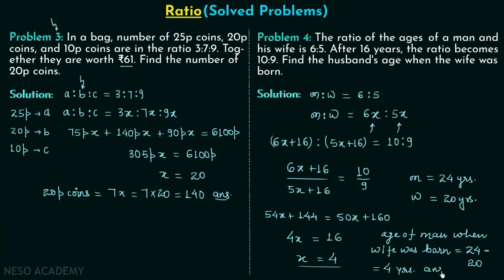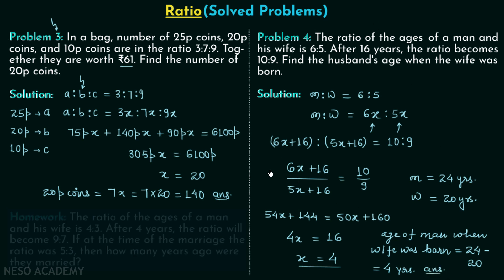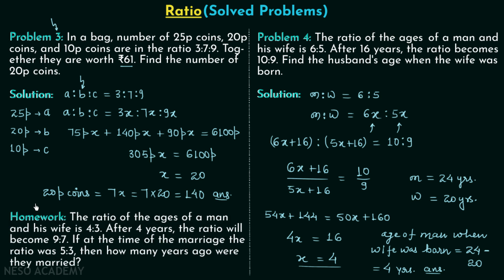We have solved problem number 4. Now for the homework problem: the ratio of the ages of a man and his wife is 4:3. After 4 years the ratio will become 9:7. If at the time of marriage the ratio was 5:3, how many years ago were they married? Try to find the answer and post it in the comment section.